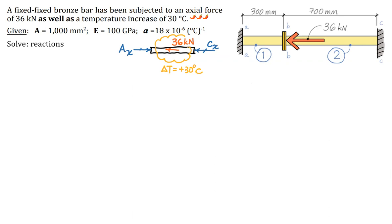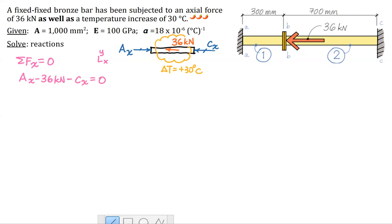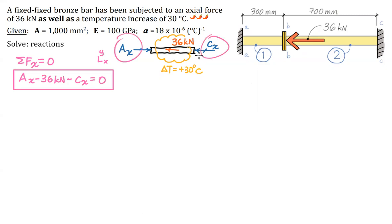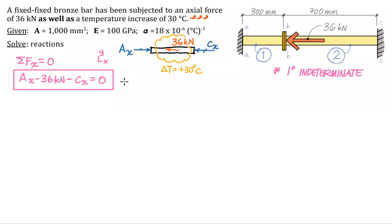Now we're ready to start partitioning this indeterminate structure into subsystems. It is indeterminate because we only have one equation of equilibrium — summation of forces in the x-direction equals zero: A sub x minus 36 kilonewtons minus C sub x equals zero. That is one equation with two unknowns, so this structure is one degree indeterminate. In addition to equilibrium, we also need to look at deformation compatibility.